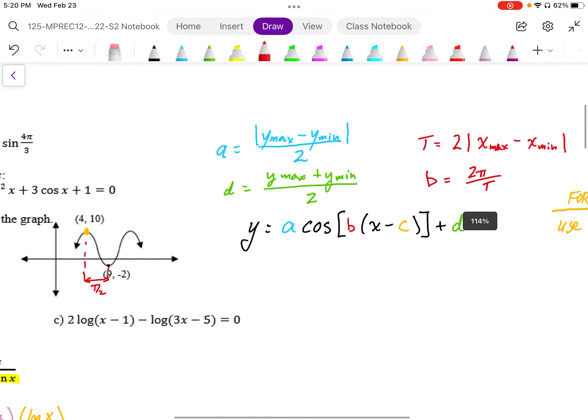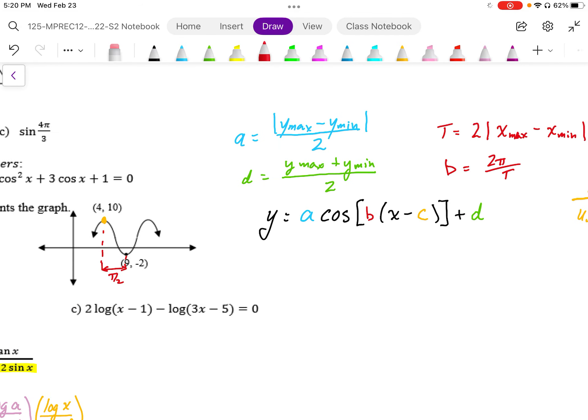So, then we can just plug all this stuff in. So, if I want to get the amplitude, the amplitude is equal to the distance 10 minus negative 2. And that's going to give me a distance of 12 divided by 2 gives me an amplitude of 6.